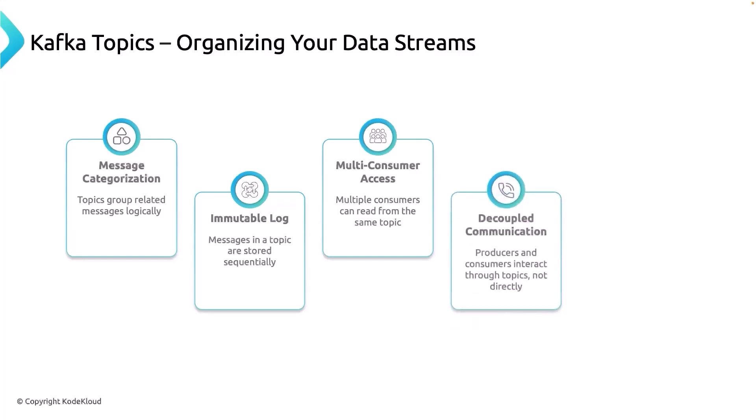Next up is decoupled communication. Kafka topics enable producers and consumers to interact through topics, not directly with each other. Producers write messages to a topic and consumers read from the topic at their own pace. This decoupling is what makes Kafka so powerful for building scalable, asynchronous systems — you don't need to worry about synchronizing producers and consumers, as they operate independently through the topic.